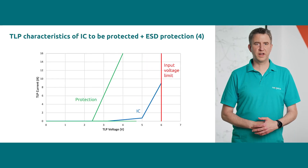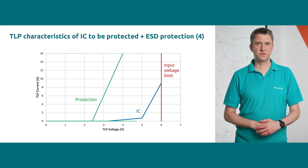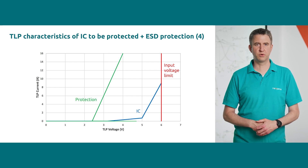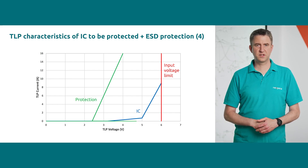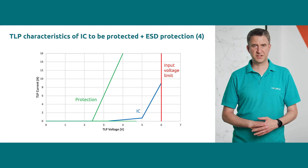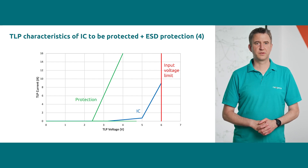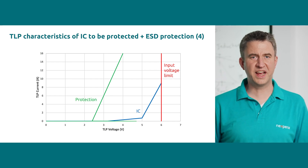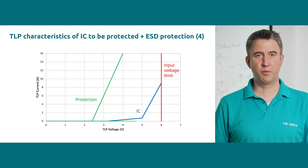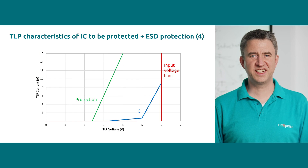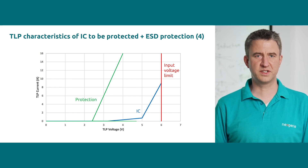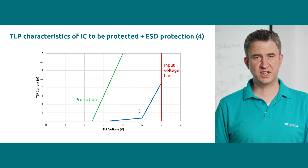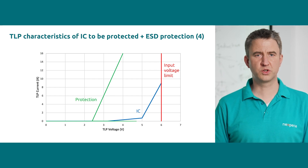Although overlaying the TLP characteristic curves is very intuitive, it only looks at the bare TLP characteristics of the protection components. Other parts of the system, like the PCB with its parasitic elements, are not considered. This generally gives good guidance, but it may not be 100% accurate in some cases. For a better modeling of the system with detailed insights into residual currents and clamping voltages, we suggest to look at SEED simulation, which is also presented in another video of this series.